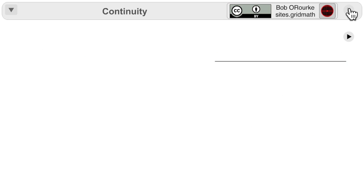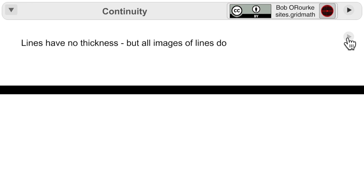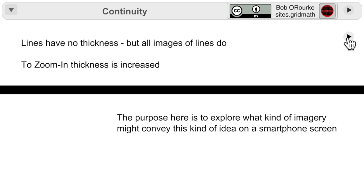That's coming up. First, an explanation. Lines themselves in the abstract have no thickness, but the images of the lines do. So, to create the appearance of zooming in on a point, the thickness is increased and exaggerated.